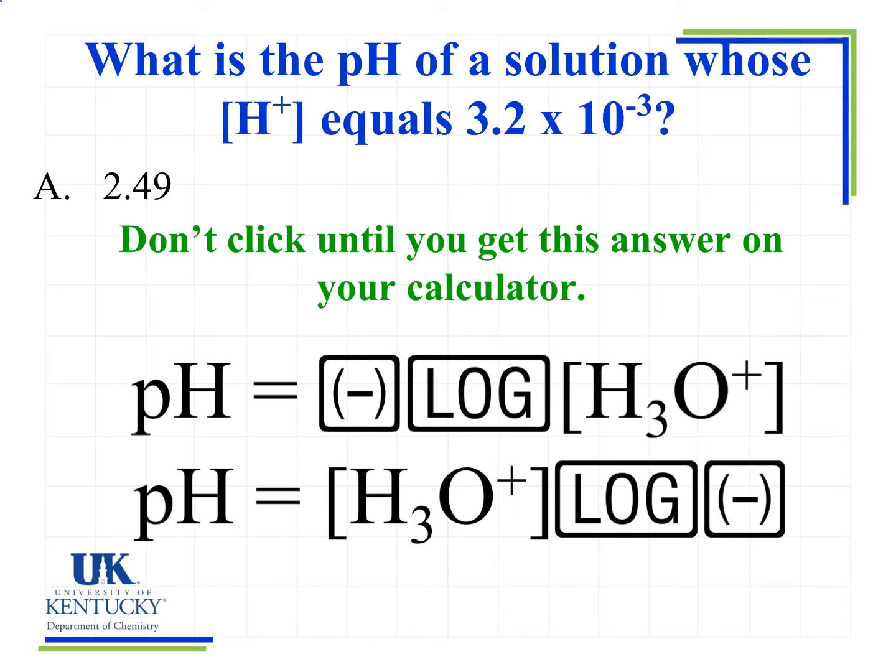We're going to talk about two different methods. The first is for the calculator that I recommended, the TI-30X2S. When you want to find pH, you'll use your negative sign, then you'll hit the log button. Make sure there's LOG and LN, which is natural log. We want to use the LOG button. Then you'll type in your concentration, which is 3.2 times 10 to the minus 3. Make sure you're using your scientific notation correctly. 3.2, you'll hit the EE button, negative 3, and then you hit enter, and that will give you the pH value.